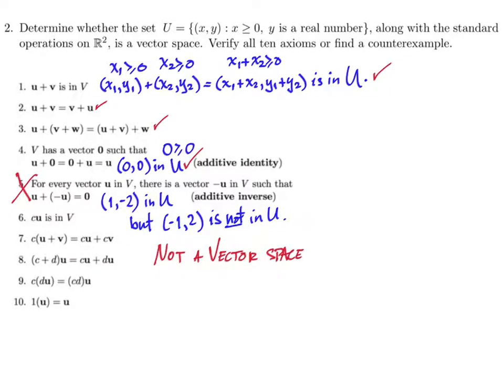So after you've done a lot of these, you will start to get some intuition. And so you might look at a set like this and go, I have a feeling number five is not going to work. And then you zero in on that and prove that it doesn't work. You might have to try a couple of different axioms before you find one that doesn't work. But eventually, you'll develop an intuition that'll help you save some time. If it is a vector space, you really do have to prove all 10 axioms.